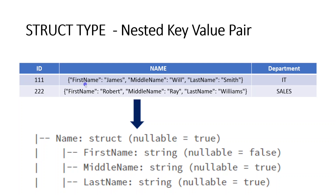In case I am defining three key-value pairs — first name, middle name, and last name — and while creating the data I give only two values, first name and last name, then it is going to throw an error. Or if I add an extra key-value pair, it will also throw an error. So in struct type, we have to specify the number of key-value pairs and for each record it must contain a value. Even if we don't have any proper value, we have to populate it with null.